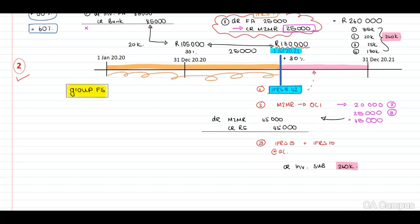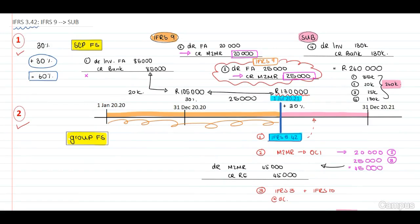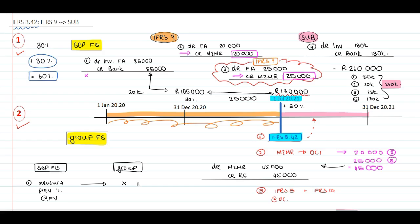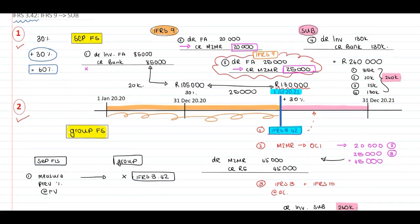To summarize: in your separate financials, your journal entry is to revalue your previously held shares — measure the previous percentage at fair value. In our group, when there's a change, we don't do anything because this is already at fair value as per IFRS 3 paragraph 42, which comes through due to IFRS 9. The second rule: any amounts in OCI are transferred to your retained earnings.